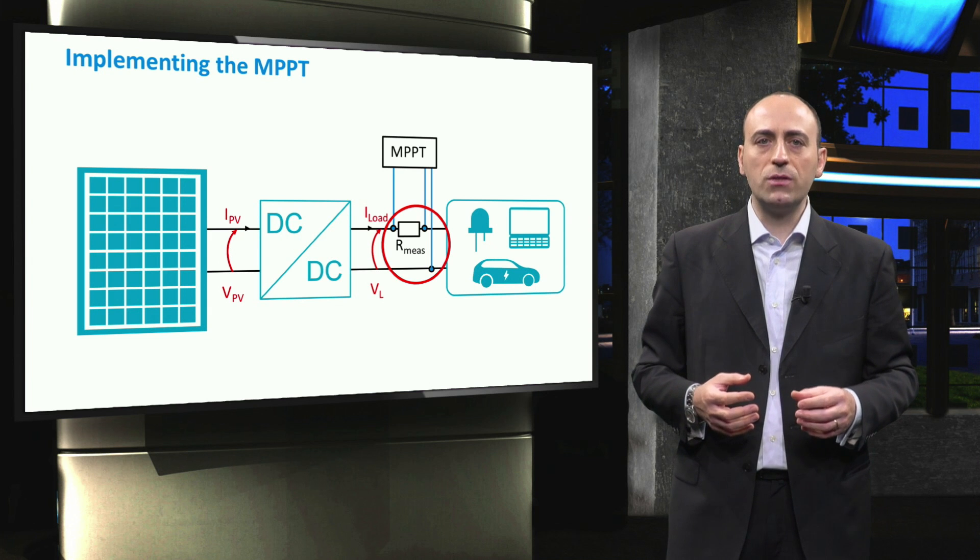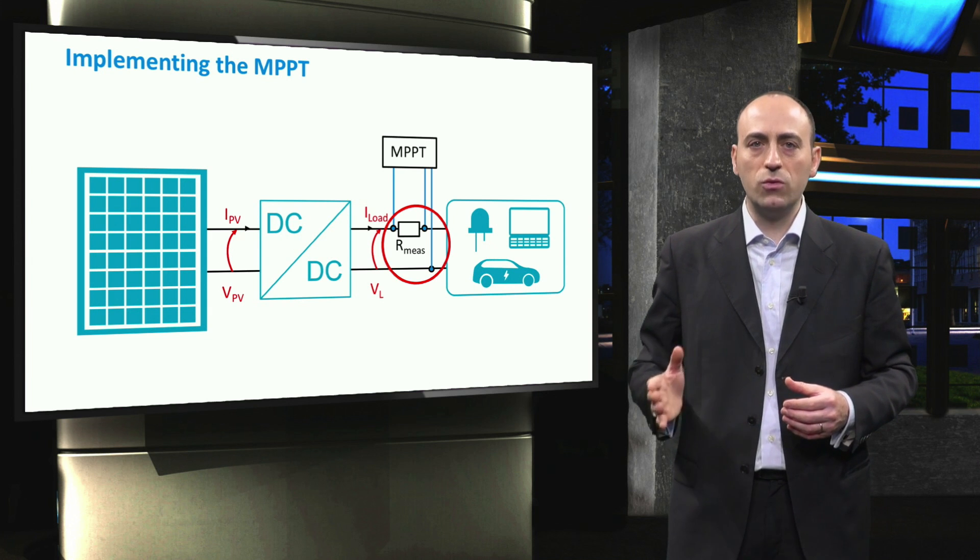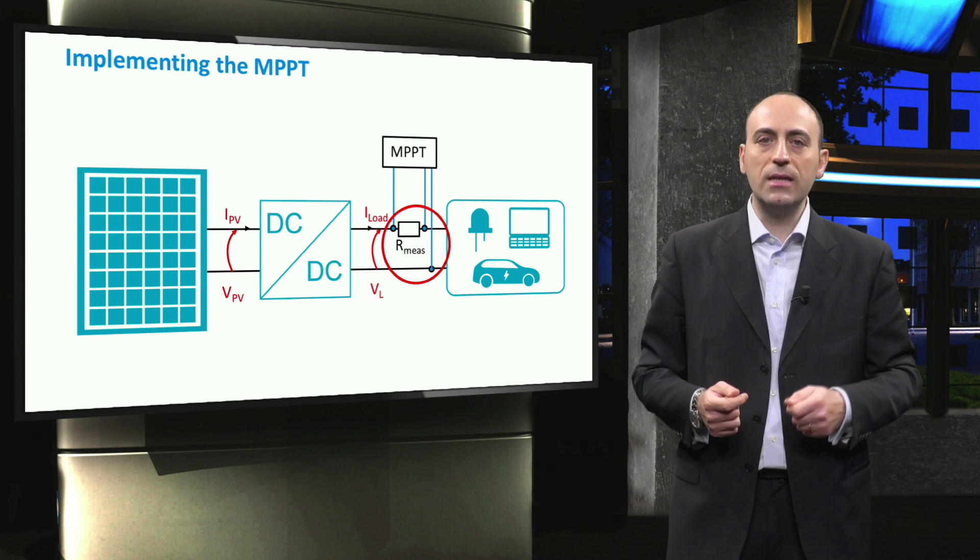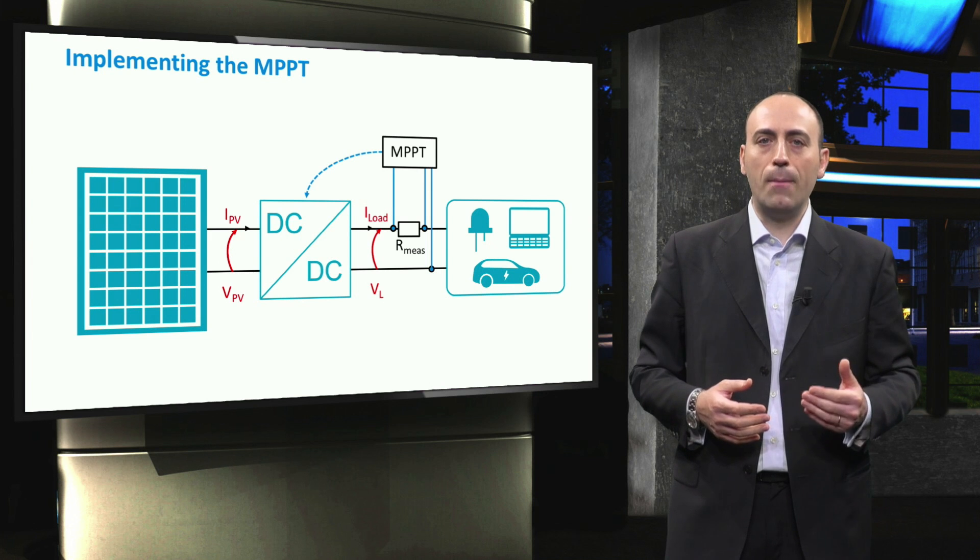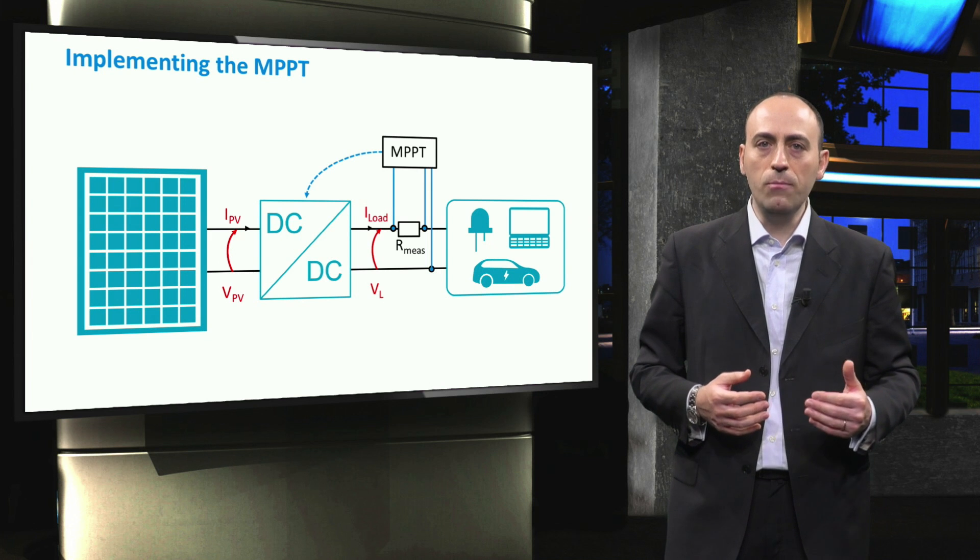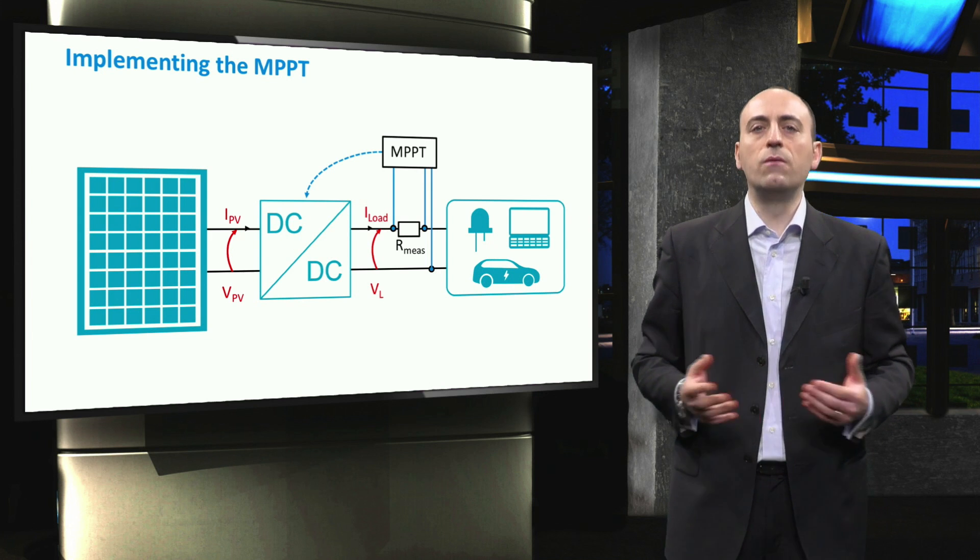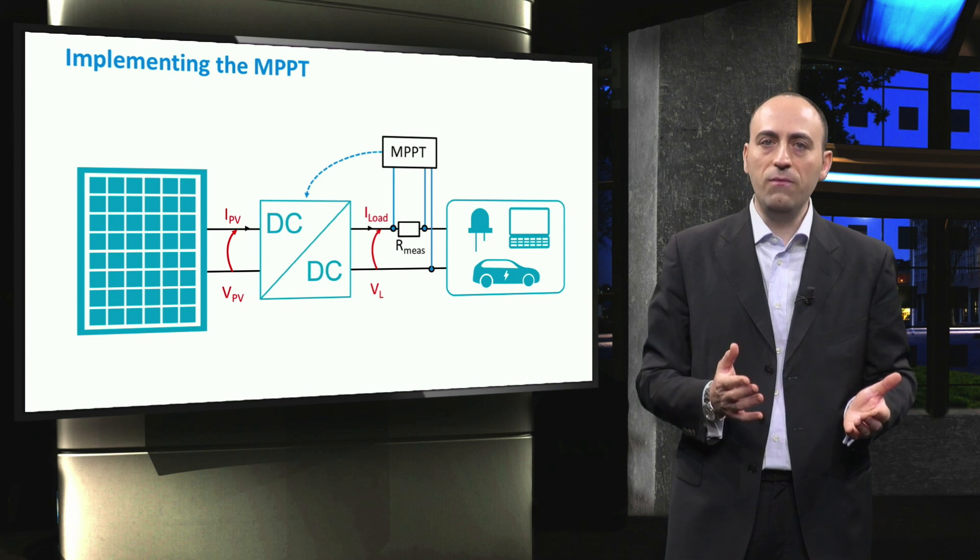The tracker measures the current and voltage at the output side and, according to its algorithm, it sends signals to the DC-DC converter, for example to step up or down the voltages between input and output, in order to meet the voltage requirements of both the PV and the load sides.